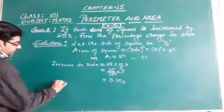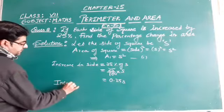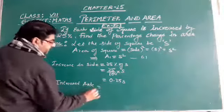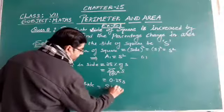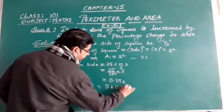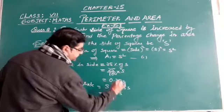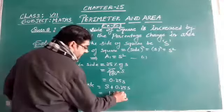So the increased side will be S plus 0.25S, which equals 1.25S.